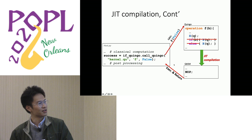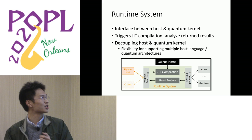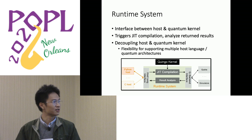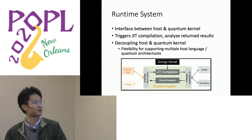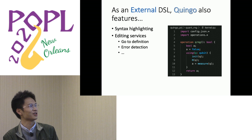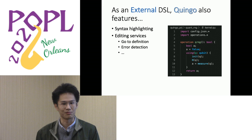Finally, we have a runtime system to put all these components together. The runtime system serves as an interface between the host and the quantum kernel — it triggers JIT compilation and analyzes return results from the quantum kernel. Since the runtime system decouples the quantum kernel from the host, we can support multiple host languages and quantum architectures. As an external DSL, Quingo also features syntax highlighting and editing services in VS Code.